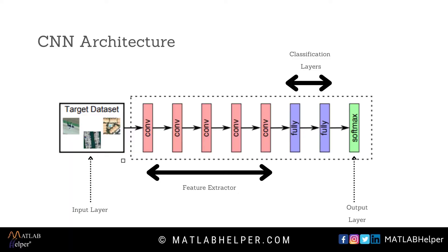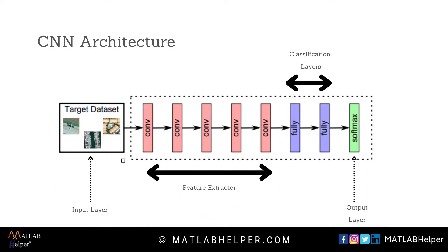Right here we can see a simple architecture of a CNN network. We can divide a CNN network into four parts. The first part has input information. The second has feature extractors — in the feature extractor we mainly use a combination of convolutional and downsampling layers. The third has a fully connected layer and the last one has an output layer.